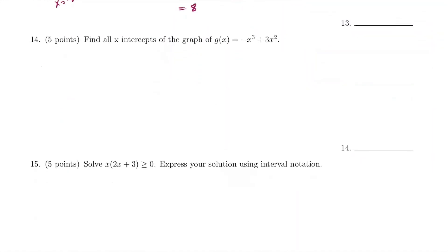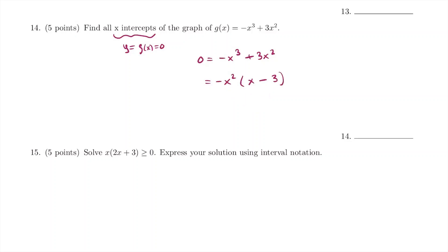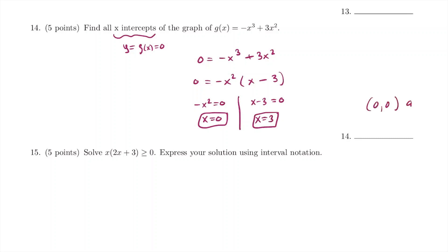For number 14, we find the x-intercepts of g(x) = −x³ + 3x². Set g(x) = 0: 0 = −x³ + 3x². Factor out −x²: −x²(x − 3) = 0. Setting each factor to zero gives x = 0 (from −x² = 0) and x = 3 (from x − 3 = 0). So the x-intercepts are (0, 0) and (3, 0).